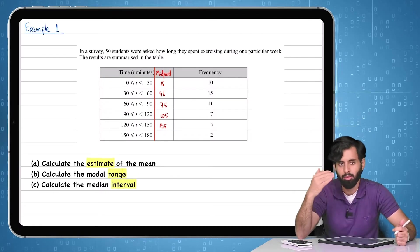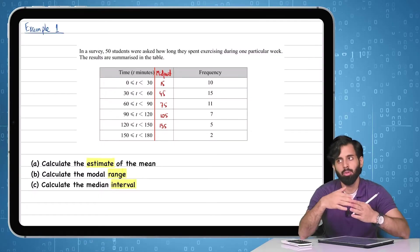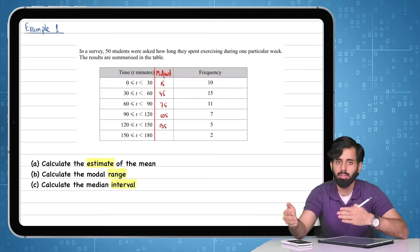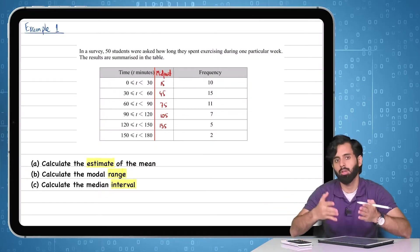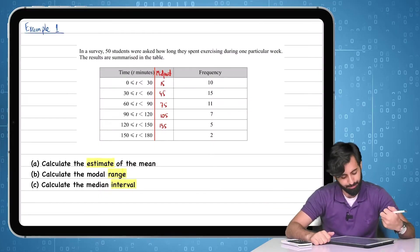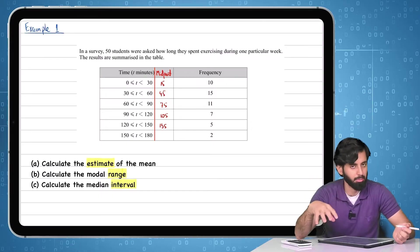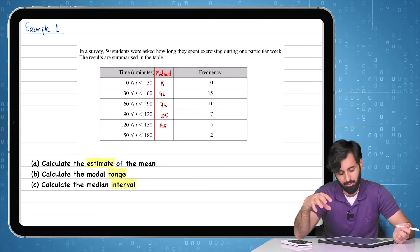So you chop 30 by 2, that's 15. You either add 15 to the lesser value, meaning you can add 15 to 120, or you can subtract 15 from 150 in order to achieve the midpoint. Let's do this. Let's calculate the midpoint of 150 to 180 the exact same way.